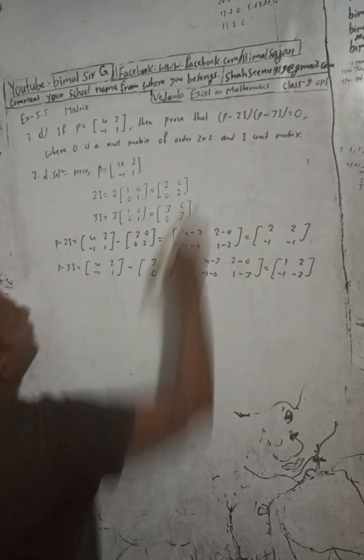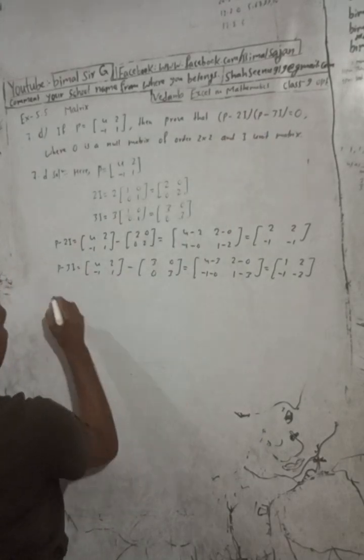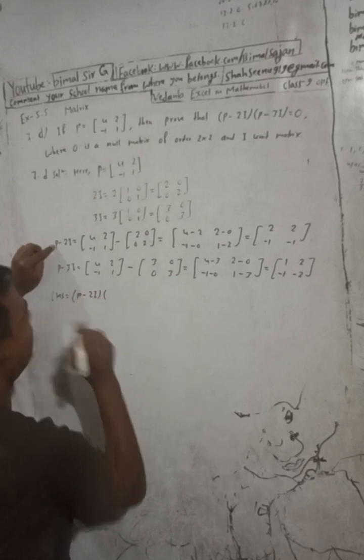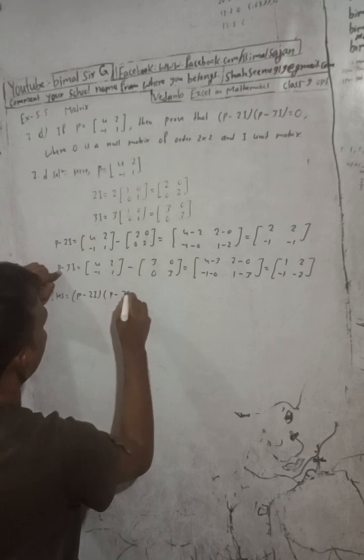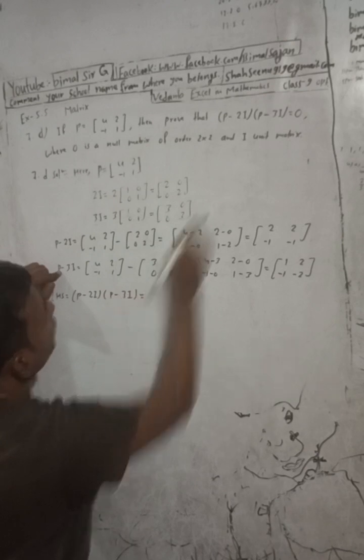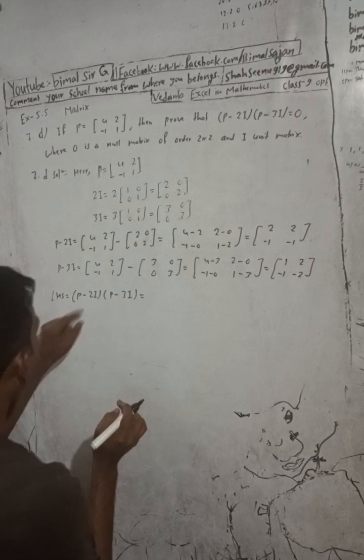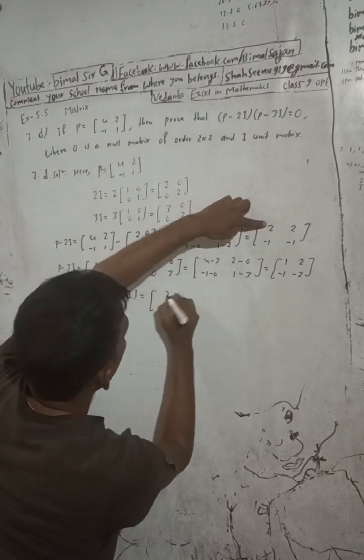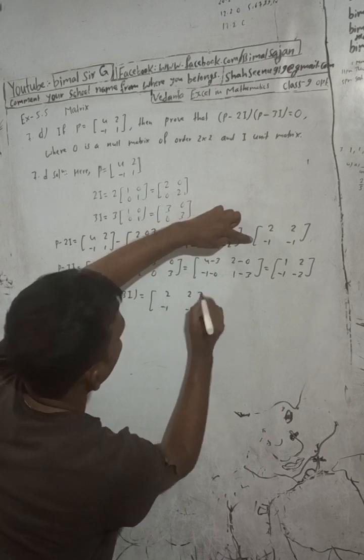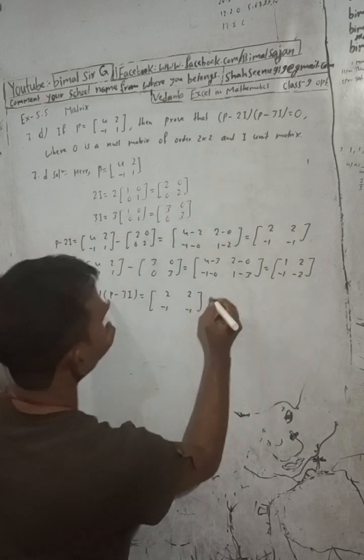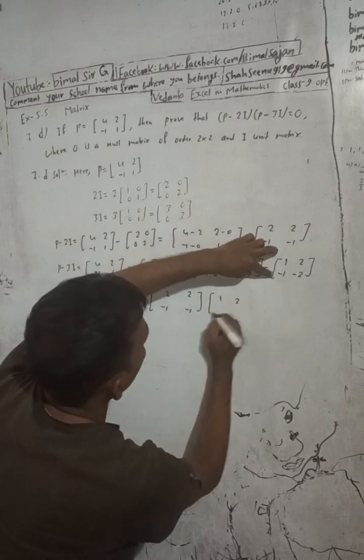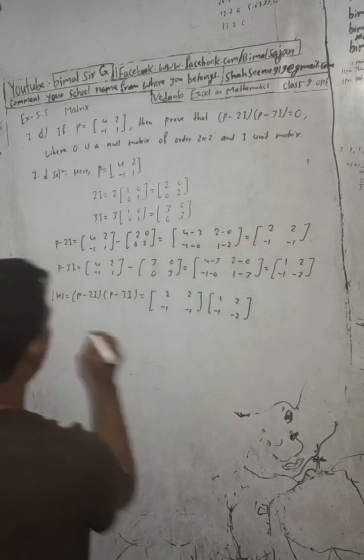Now we multiply these matrices. We take (P - 2I) which is [2, 2; -1, -1], and multiply by (P - 3I) which is [1, 2; -1, -2].